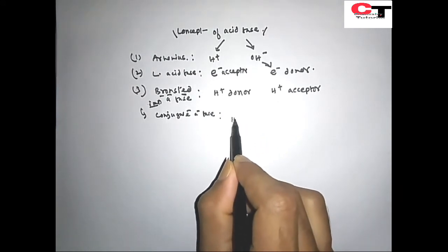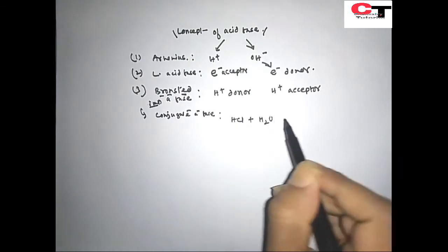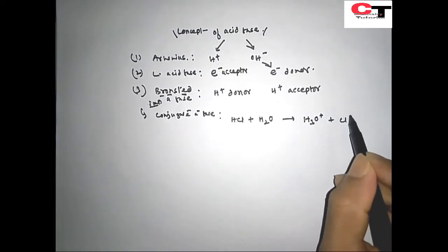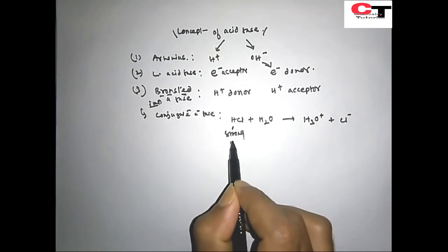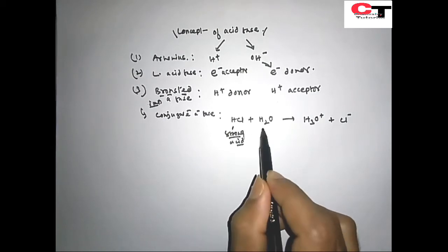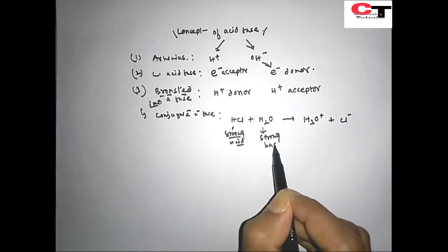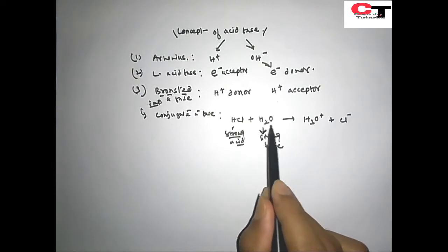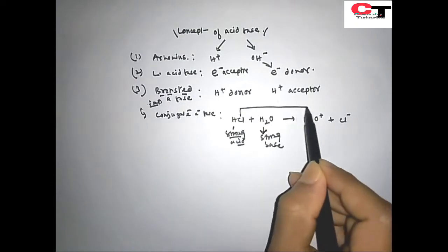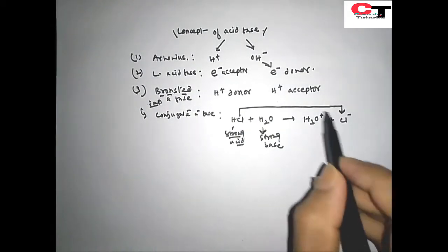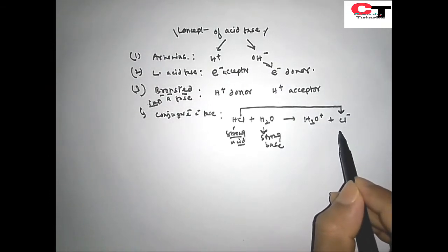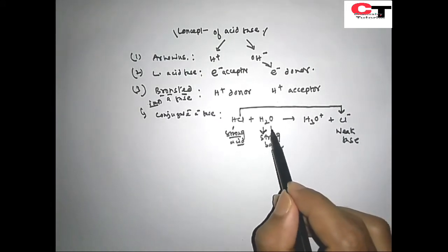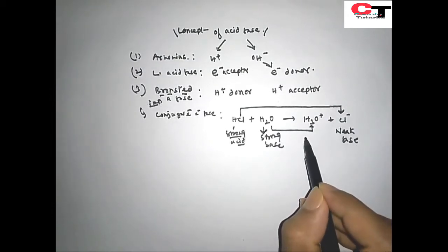What is the conjugate acid-base mechanism? Suppose a reaction occurs between an acid HCl and water — it gives hydronium ion (H₃O⁺) and chloride ion (Cl⁻). We know HCl is a strong acid, therefore it reacts with water, which according to Bronsted acid-base concept acts as a strong base. This strong base gives a conjugate base, which is a weak base, and this strong acid gives a weak acid.